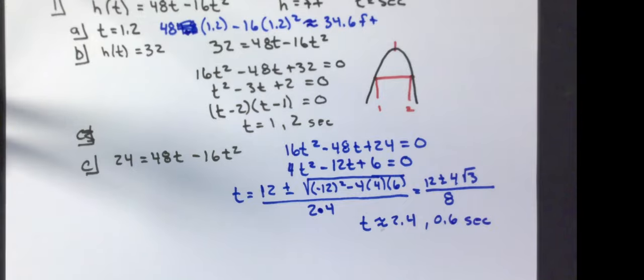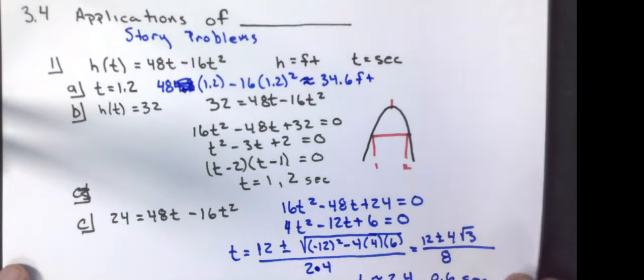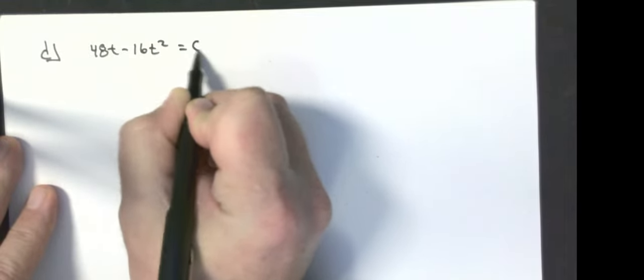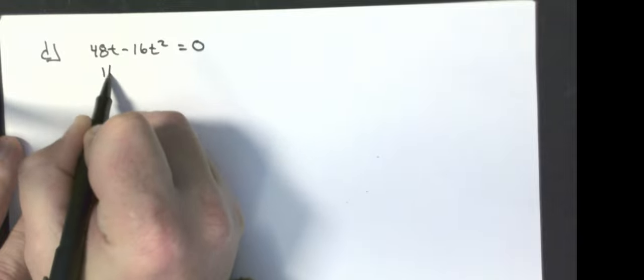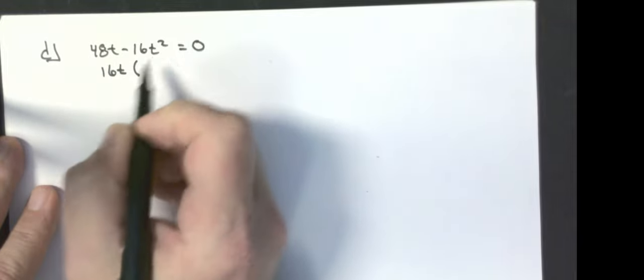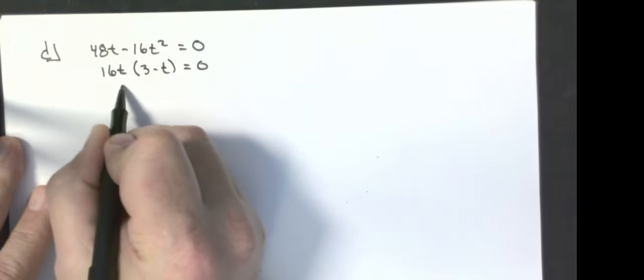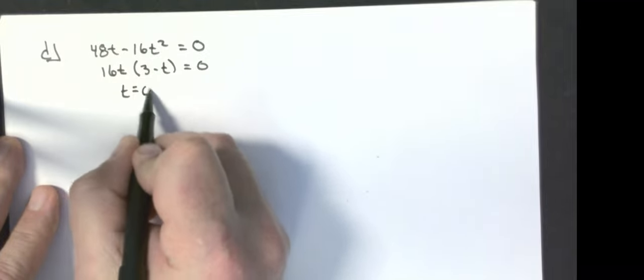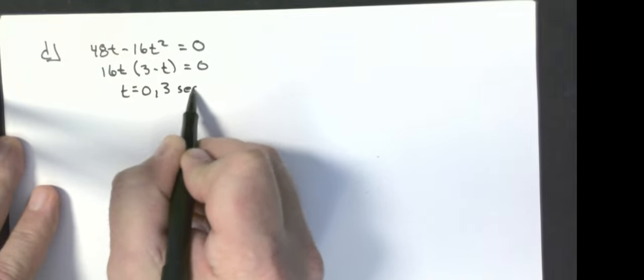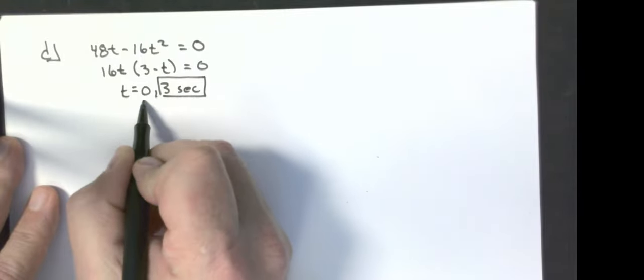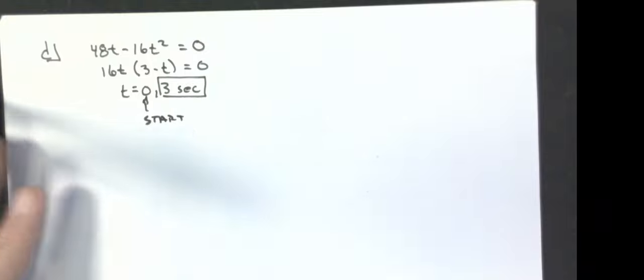Part d, when does the rock hit the ground? Well, what is the height at the ground? Well, the height is 0. So for part d, I want to know when 48t minus 16t squared is equal to 0. I'm going to pull a 16t out of everything. That's going to leave me with 3 minus t. So I know t is 0 at 0 and at 3 seconds. So we're going to say 3 seconds because it started at the ground here. And then it hit the ground at 3 seconds.